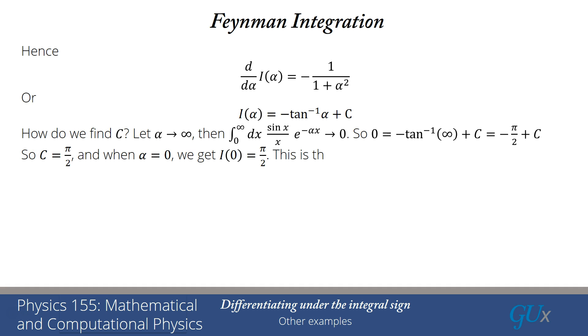Now, the value that we were interested to determine our original integral is the case where alpha is equal to 0. So if I plug in alpha equals to 0, I find i of 0 is equal to pi over 2 because tan inverse of 0 is just equal to 0. And that was the result we were after.